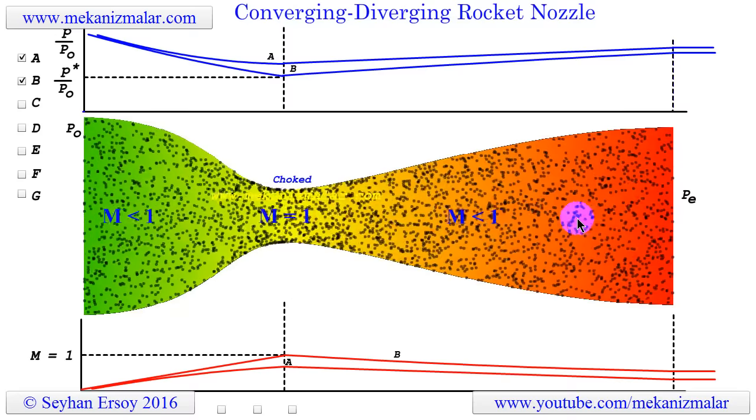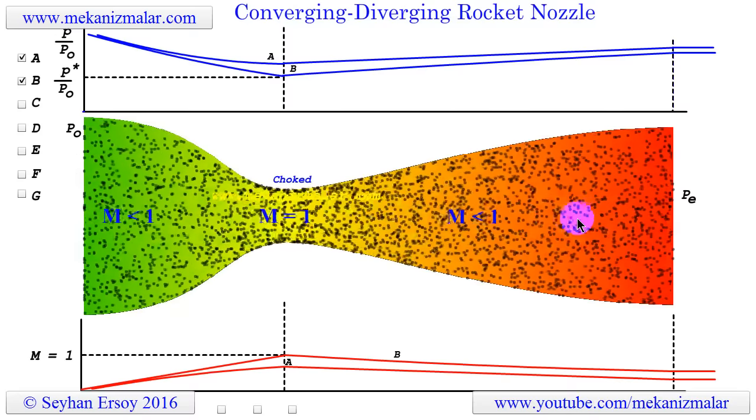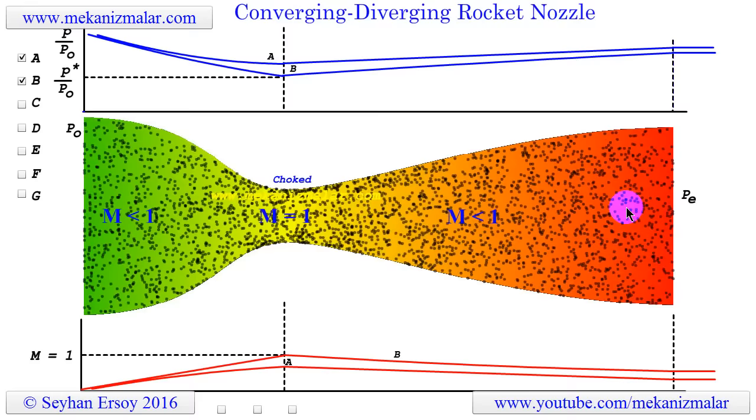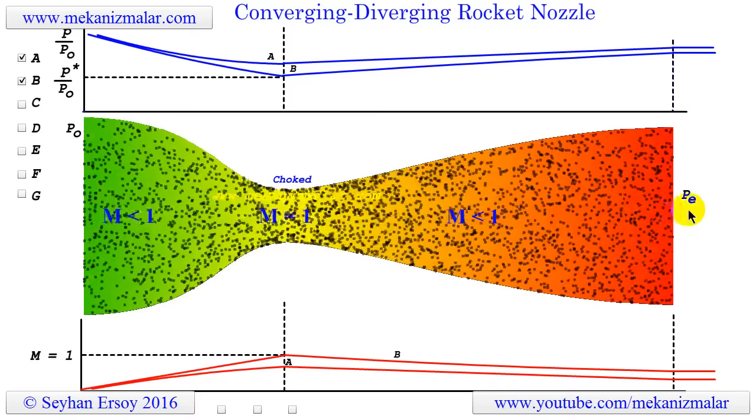Therefore, if we design a nozzle with this exit pressure, the nozzle will not be efficient, since the exit flow speed is not fast enough.